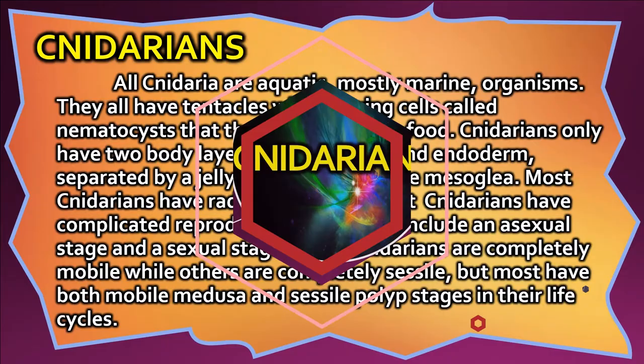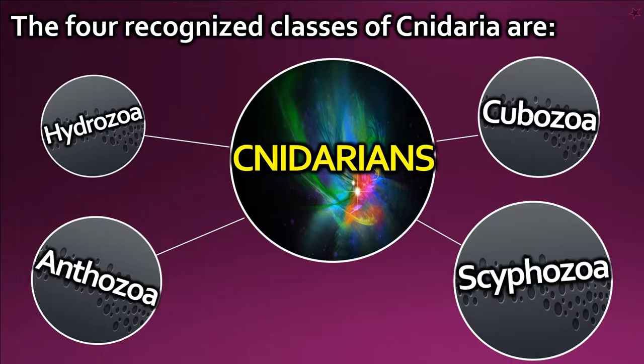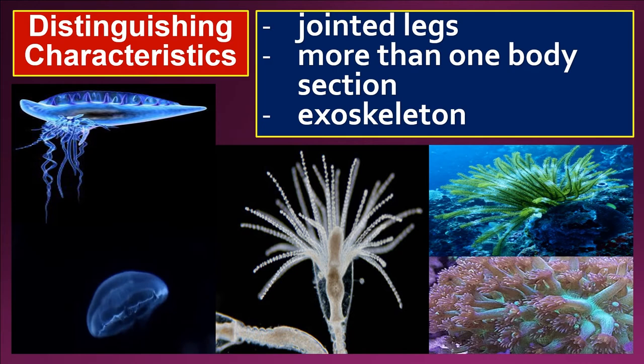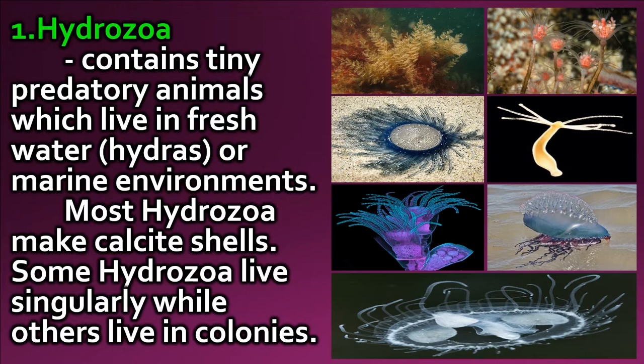The four recognized classes of Cnidaria are Hydrozoa, Cubozoa, Scyphozoa, and Anthozoa. Hydrozoa contains tiny predatory animals which live in fresh water — hydras — or marine environments. Most Hydrozoa make calcite shells. Some hydrozoa live singularly while others live in colonies.